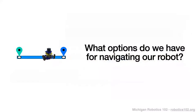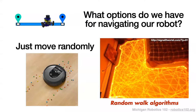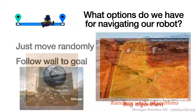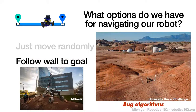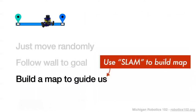What options do we have for navigating our robot? The simplest thing is to move around randomly — the robot bounces around and by chance ends up at the goal if we let it run long enough, which is great for vacuum cleaners covering area cheaply. Another approach is the bug algorithm, which navigates toward the goal and gets around obstacles, though it may not always be the fastest or most efficient route.